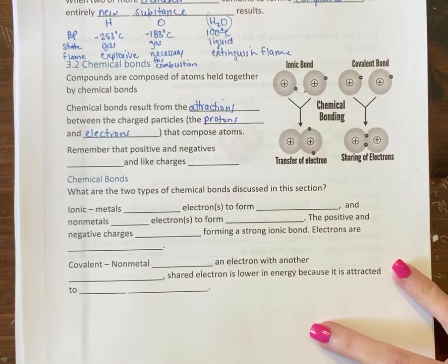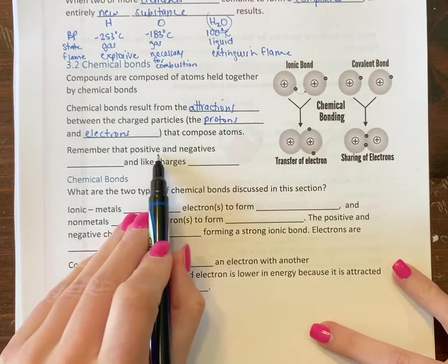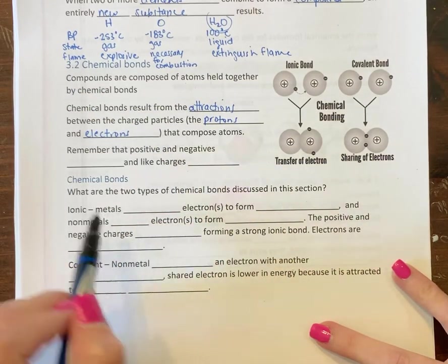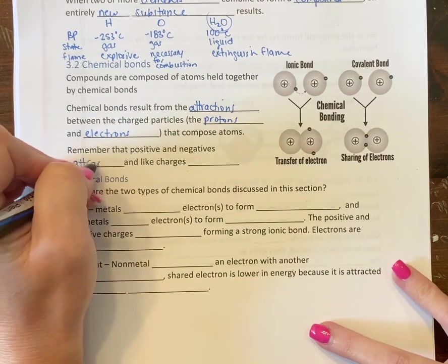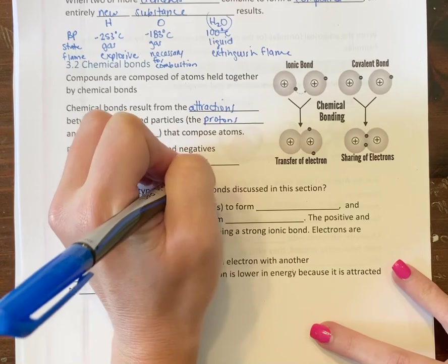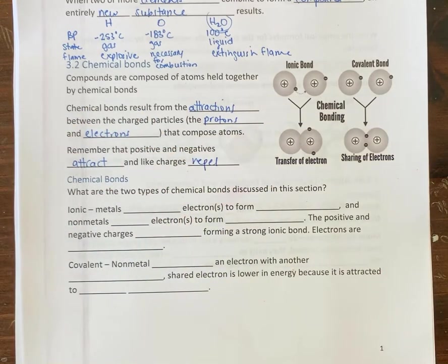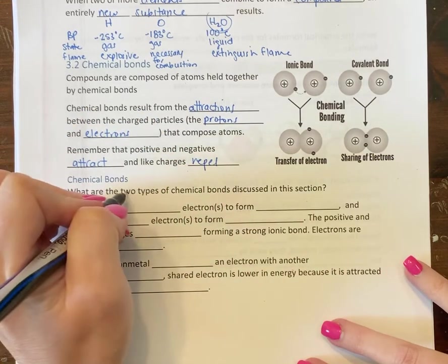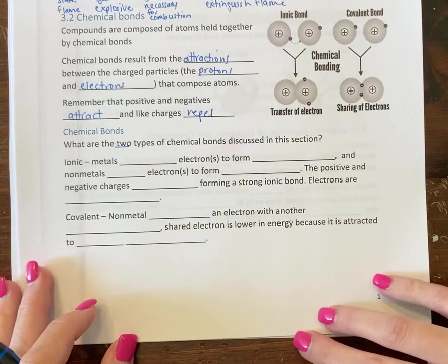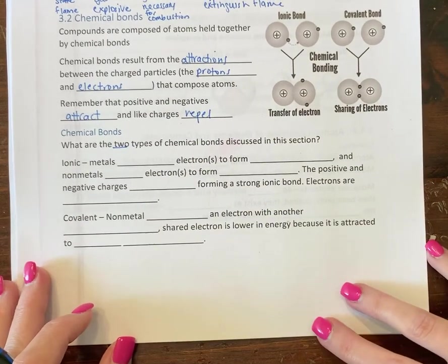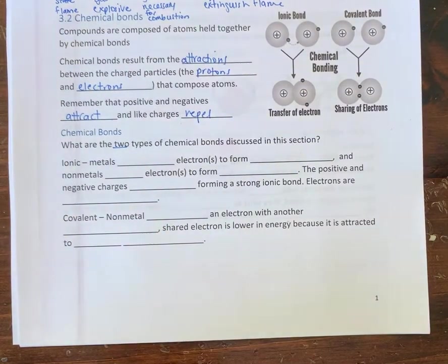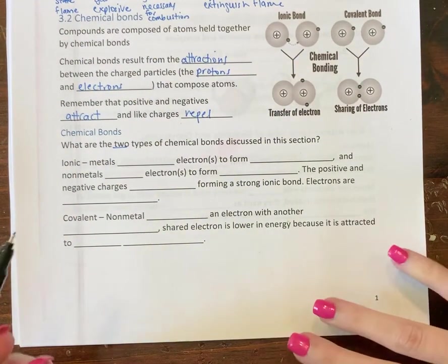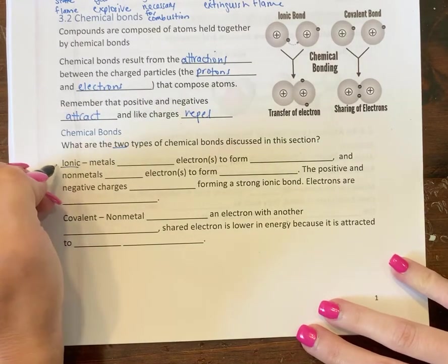That compose the atoms. Remember that positive and negatives attract each other, opposites attract, and like charges repel. Now there are two types of bonds that we're going to talk about here. The first one is ionic, so these are ionic bonds.